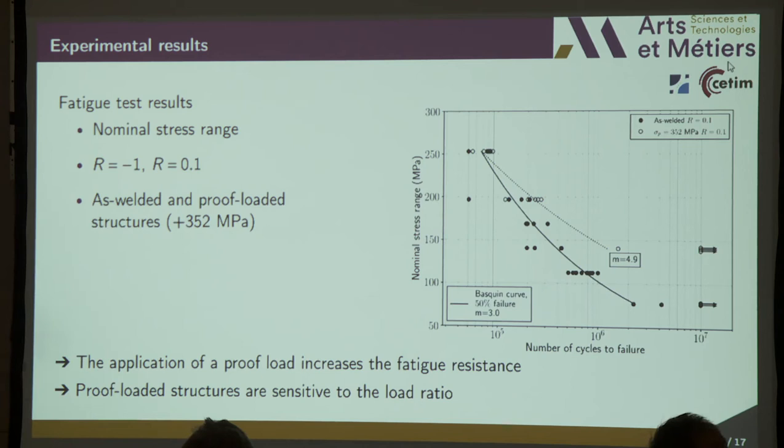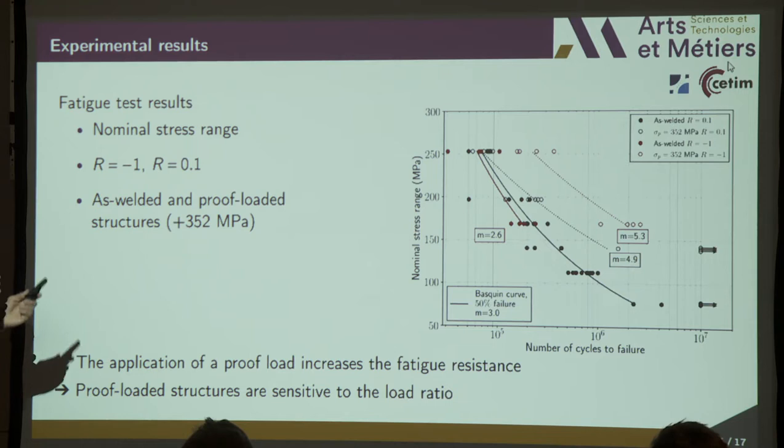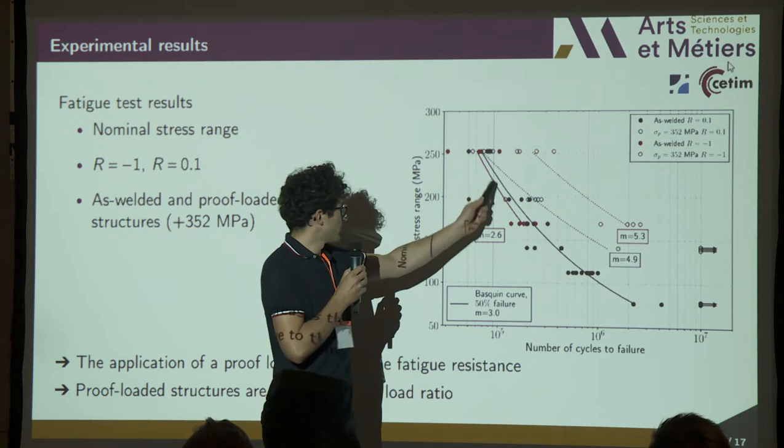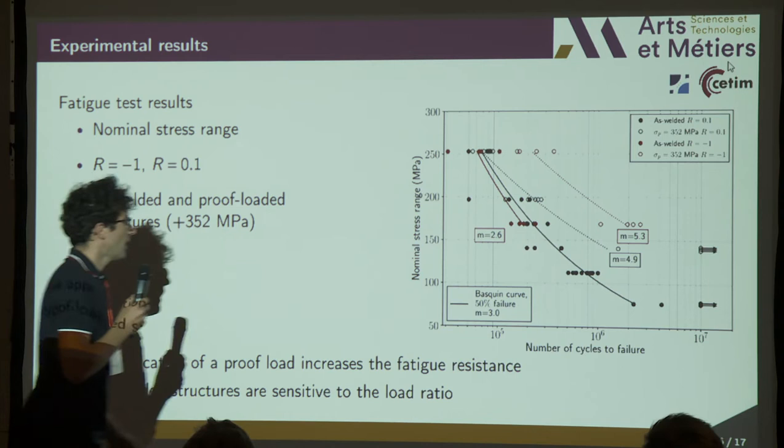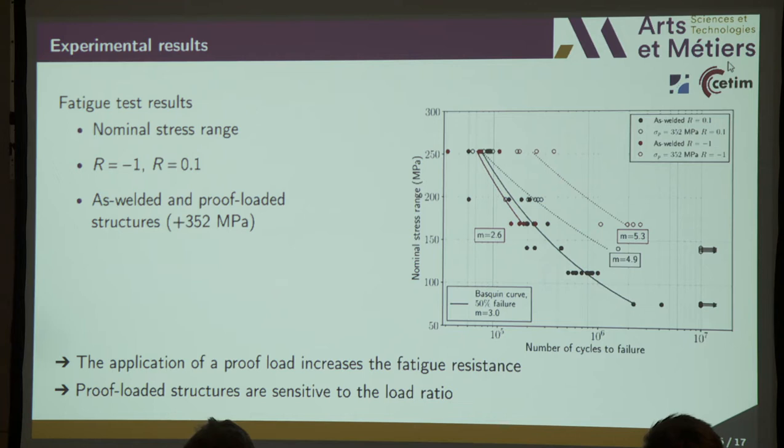When we do the same exercise on as-welded and proof-loaded structures tested with a stress ratio of R = -1, we observe there is a negligible effect of the stress ratio on as-welded structures, but a non-negligible effect of the stress ratio on proof-loaded structures between both conditions. We also observe a beneficial influence of a proof load on fatigue resistance.